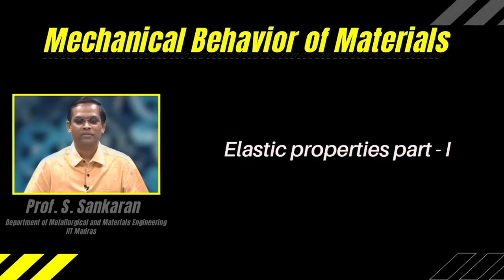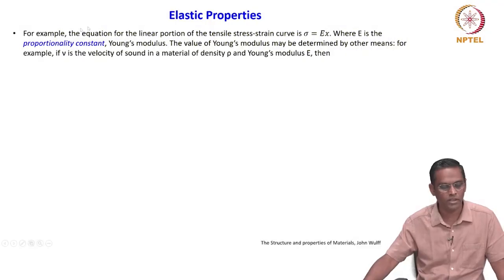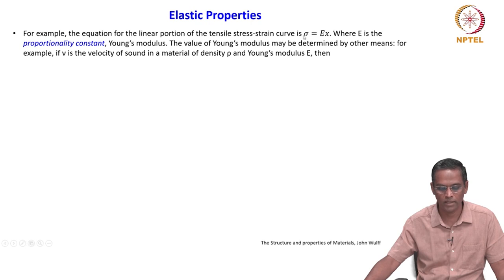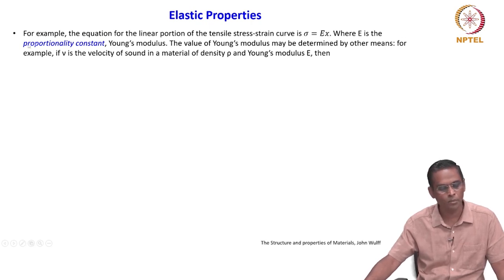Hello, I am Professor S. Sankaran in the department of Metallurgical and Materials Engineering. For example, the equation for the linear portion of this tensile stress-strain curve is sigma is equal to E times epsilon, where E is the proportionality constant that is Young's modulus.